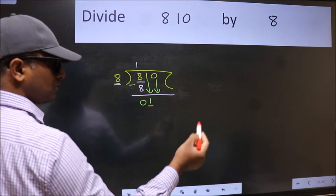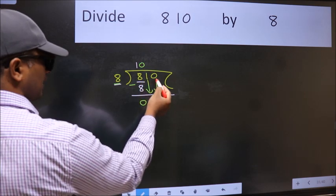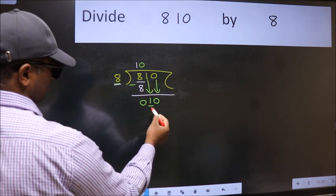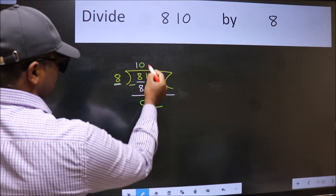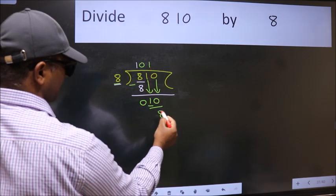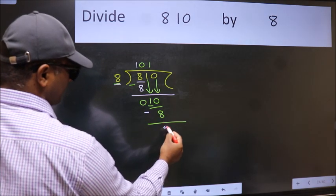And the rule to bring down the second number is put 0 here. Then only we can bring this number down. So 10. A number close to 10 in the 8 table is 8 once 8. Now we subtract. We get 2.